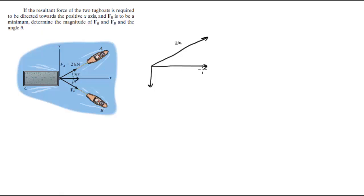For the resultant force to be directed towards the positive x-axis, you know that this angle is 30 degrees. So to find the resultant force, 2k cosine of 30 is equal to this line, which will be FR, which will be equal to 1.73k.